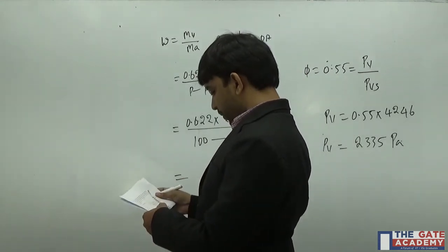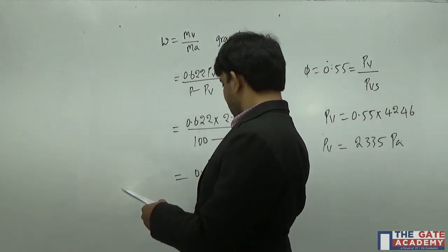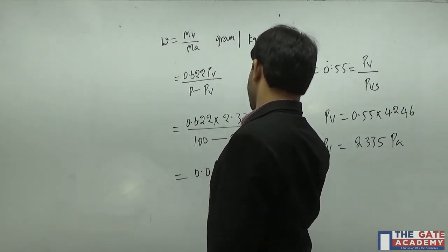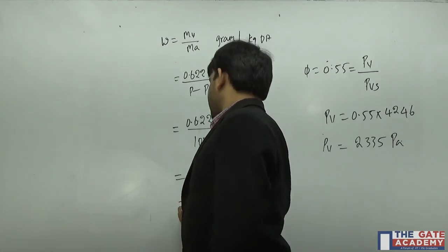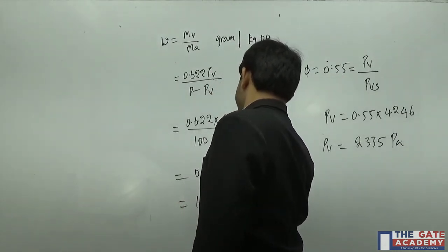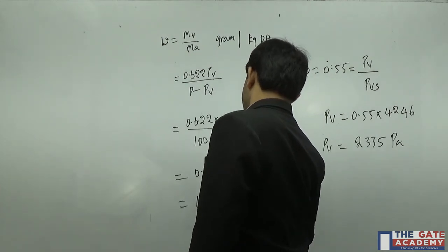If you simplify this, you will get 0.01492 kg per kg of dry air. It is 14.92 gram per kg of dry air.